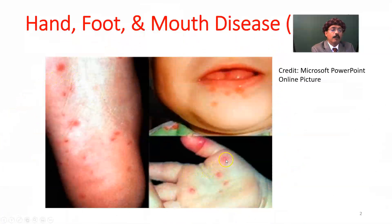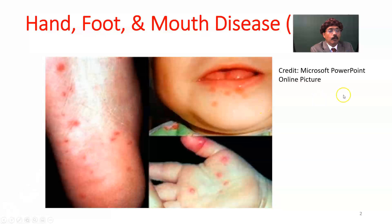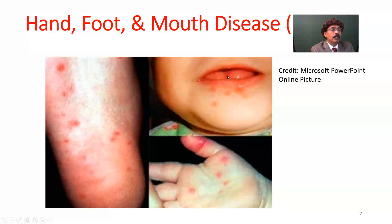There will be blister formation on the palm of the hand and on the sole of the foot. In the mouth, blisters appear around and inside the oral cavity, on the tongue, soft palate, hard palate, and even the uvula. It may be a painful condition with painful swallowing. It is not only confined to the hand, foot, and mouth — it may also be found in the perineum or buttock area in around 31% of cases.